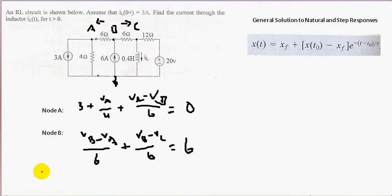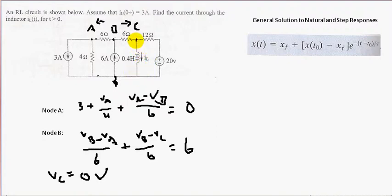Now, VC is equal to zero volts. Why? Because when we're finding the steady-state condition, inductors short. So this inductor will short, giving us a ground wire, and therefore zero voltage at node C. Essentially, what we're doing is separating this part of the circuit from the left side.